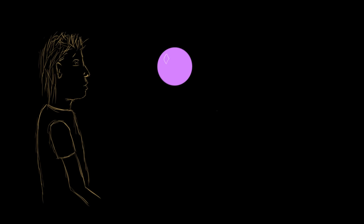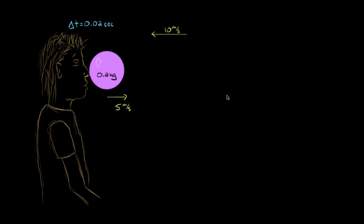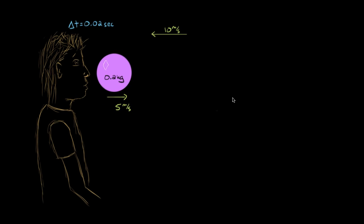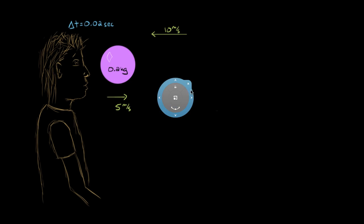Let's put some numbers on here. We're gonna need to know the mass of the ball — let's say this is a 0.2 kilogram ball. The ball comes in at a speed of about 10 meters per second, and it leaves at a speed of five meters per second, so it recoils with a little less speed than it came in with. And let's say the time that it's actually in contact with the person's face — the time the ball is getting compressed and then recoils and expands again — is about 0.02 seconds, or about 20 milliseconds.